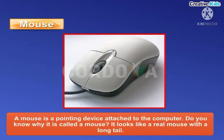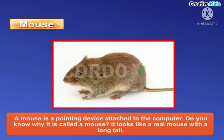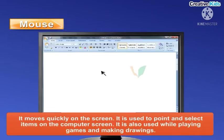Mouse. A mouse is a pointing device attached to the computer. Do you know why it is called a mouse? It looks like a mouse with a long tail and it moves quickly on the screen. It is used to point and select items on the computer screen.